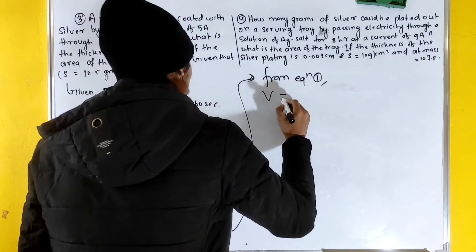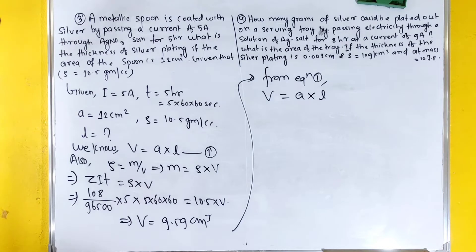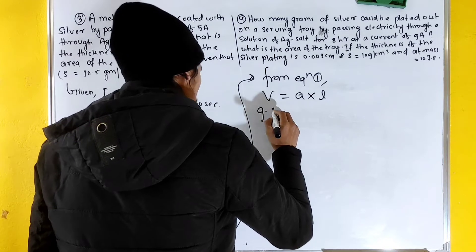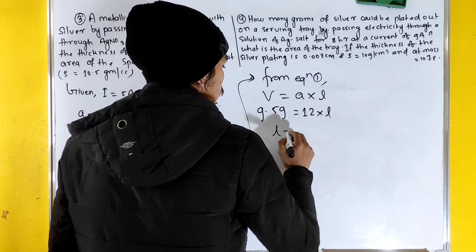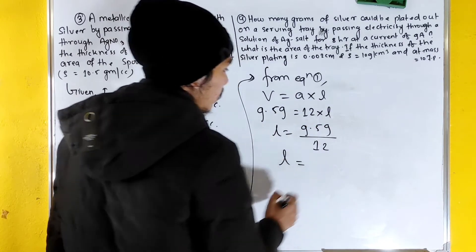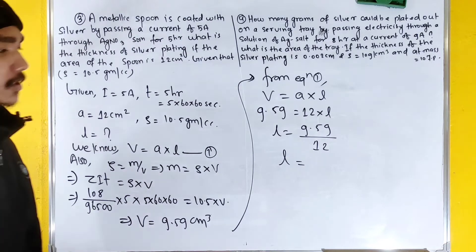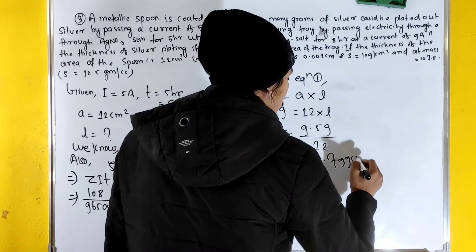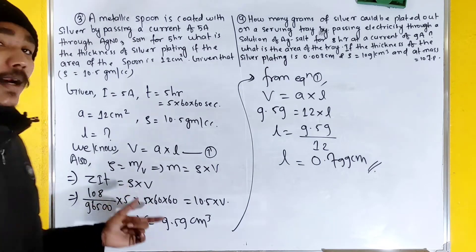From equation 1: V = A × L, so 9.59 = 12 × L, therefore L = 9.59 divided by 12. The value of L is equal to 0.799 cm. This is the required answer.